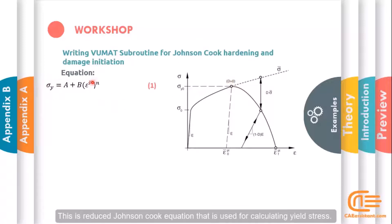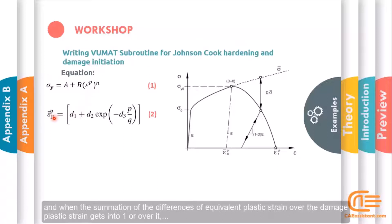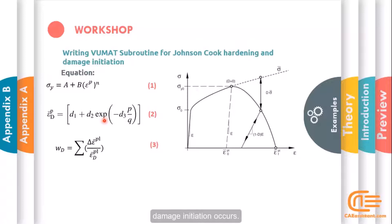The elastic region is defined, and in the plastic region yield stress and damage initiation are based on the Johnson-Cook criterion. This is the reduced Johnson-Cook equation used for calculating yield stress. The damage initiation index will be calculated based on equivalent plastic strain, and when the summation of the differences of equivalent plastic strain over the damaged plastic strain reaches one or over it, damage initiation occurs.